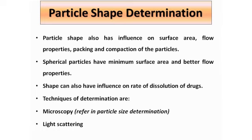The shape can also influence the rate of dissolution of the drugs. As we have already discussed, spheres have a higher surface area. If the surface area is high, the rate of dissolution of the drug increases. The techniques used for determination of particle shape are: number one, microscopy — we prefer the light microscope, and in some cases the electron microscope such as SEM and TEM, and we can also use the light scattering method.